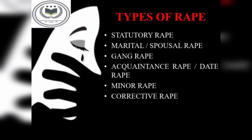There are different types of rape. Statutory rape involves adults engaging in consensual sexual relations with sexually mature minors under the age of consent. Marital or spousal rape is when rape is committed by the person to whom the victim is legally married. Gang rape is when a group of people participate in the rape of a single victim.